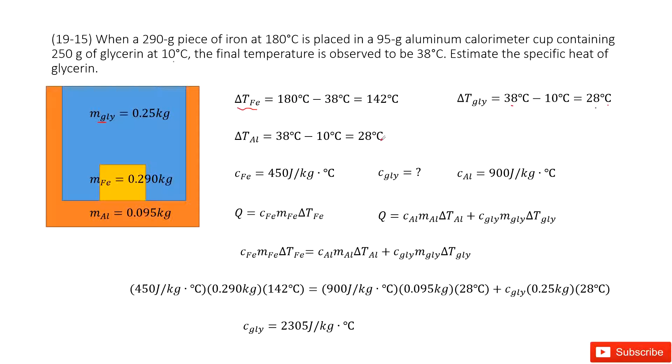Now we can check our textbook, get the specific heat for iron and aluminum. We write it there. We need to find the specific heat for glycerin, so we denote it there.